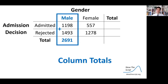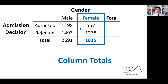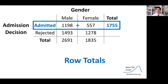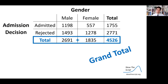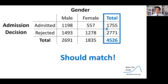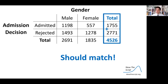I'm going to get the row totals and the column totals. A good way to distinguish between a row and a column: columns go up and down, like Greek or Roman columns. Rows go side to side, like rowing oars in a boat. So my column total for male students is 2,691. For female students, it's 1,835. I can get my row totals for admitted and rejected, and then the grand total. You can either add up the column totals or the row totals — do one or the other, and they should match.